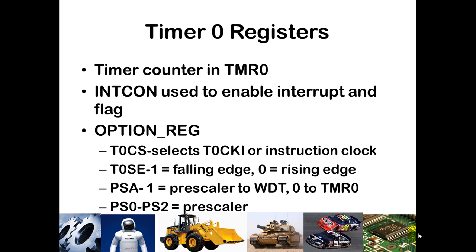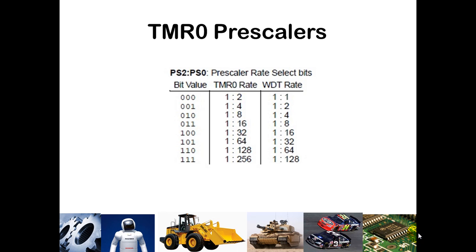The prescaler is configured in PS0 through PS2. If you want as fast as a 1-to-2 ratio — counting every two oscillations of the main system clock oscillator — you put in a bit value of 0, 0, 0. If you want to only count once every 256 cycles, you put in 1, 1, 1, and all the corresponding other ratios are available in between. Similarly, there are some other ratios when using the watchdog timer, which we'll talk about later.